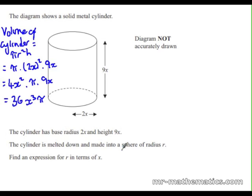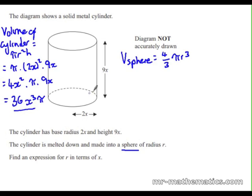The volume of a sphere is four-thirds π r cubed. So we'll equate the volume of the cylinder to the volume formula for the sphere. We get 36x cubed π equals four-thirds r cubed.